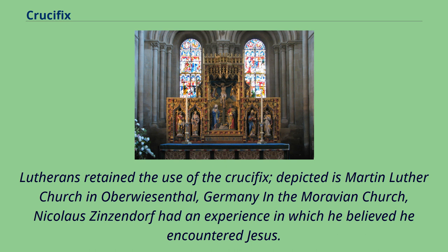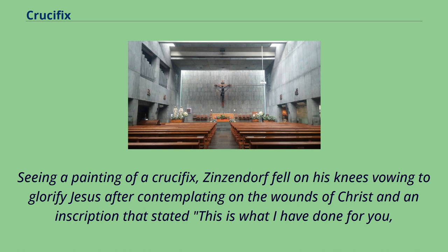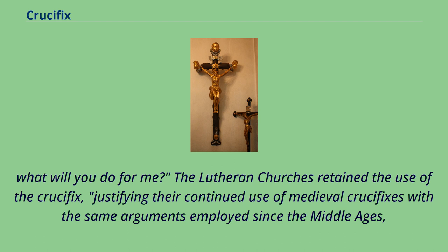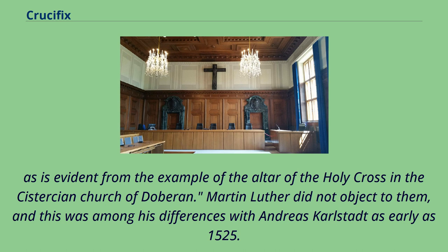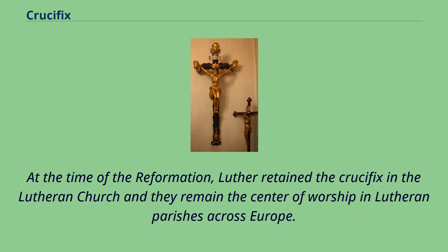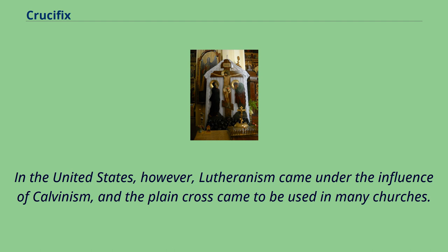Lutherans retained the use of the crucifix. In the Moravian Church, Nicholas Zinzendorf had an experience in which he believed he encountered Jesus: seeing a painting of a crucifix, Zinzendorf fell on his knees vowing to glorify Jesus after contemplating on the wounds of Christ and an inscription that stated 'This is what I have done for you. What will you do for me?' The Lutheran churches retained the use of the crucifix, justifying their continued use of medieval crucifixes with the same arguments employed since the Middle Ages. Martin Luther did not object to them, and this was among his differences with Andreas Karlstadt as early as 1525. At the time of the Reformation, Luther retained the crucifix in the Lutheran Church and they remained the center of worship in Lutheran parishes across Europe. In the United States, however, Lutheranism came under the influence of Calvinism, and the plain cross came to be used in many churches.